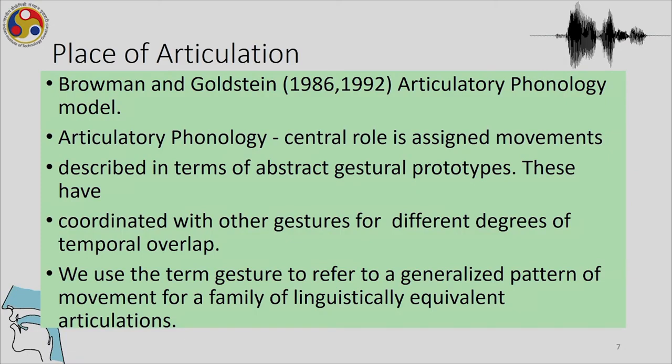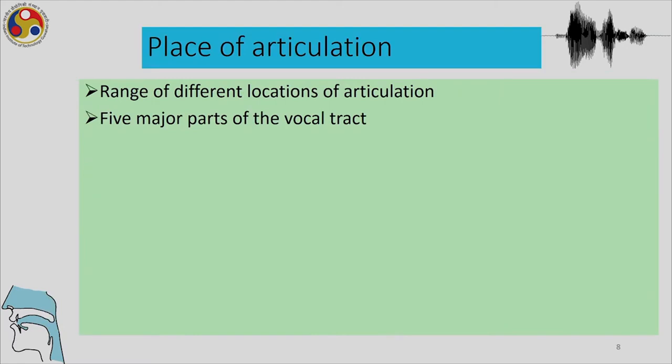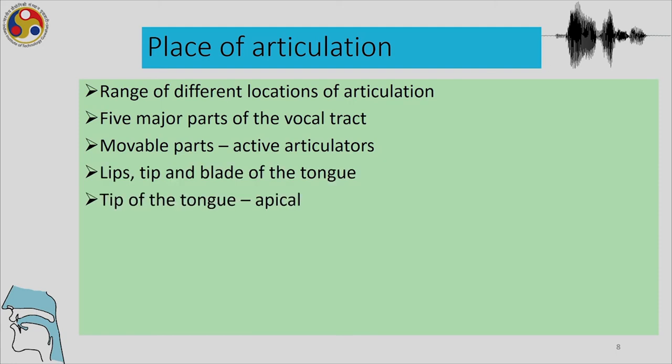Having had this brief overview about the state of languages in the world, we move on to study phonetic diversity. In the lectures on place of articulation, we have looked at different locations of articulation. There are five major parts of the vocal tract, and we have seen the movable parts: the lips, the tongue blade, and the tip of the tongue — called apical — while the centre part of the tongue is called laminal. In this lecture, we will see those distinctions.